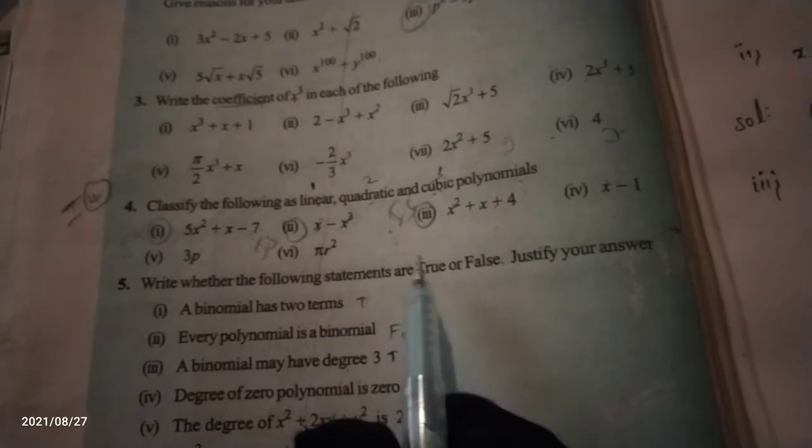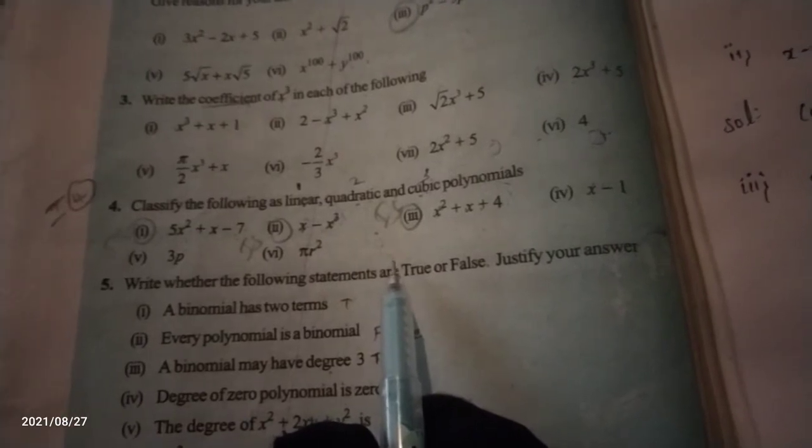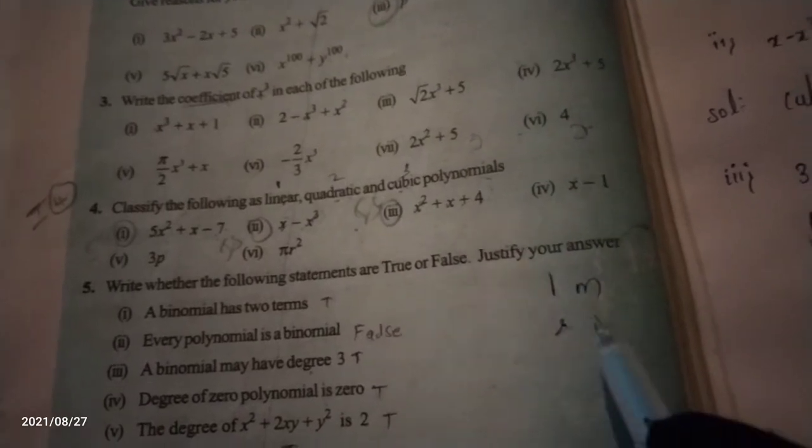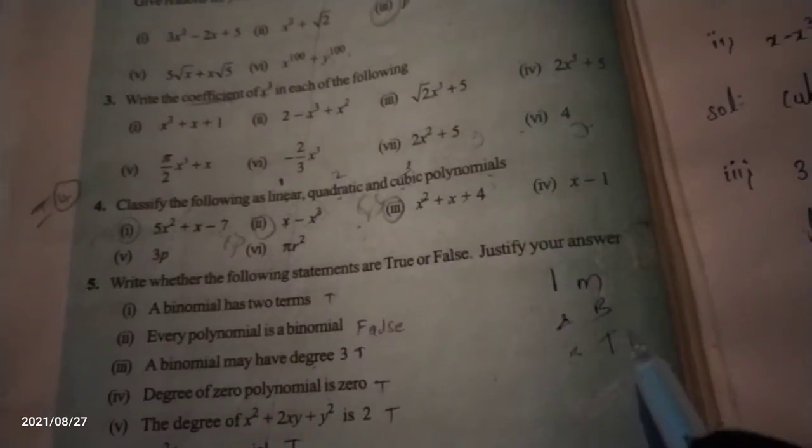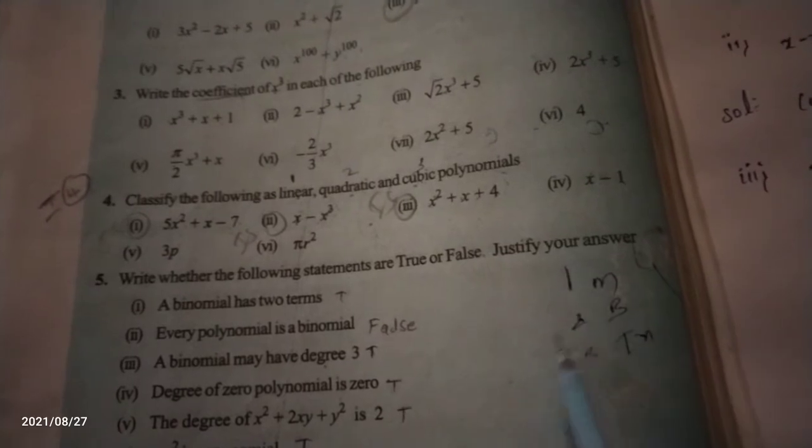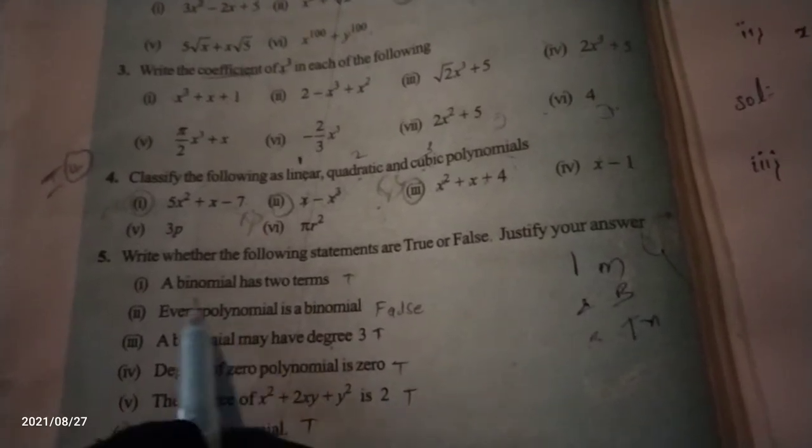The fifth question says: write whether the following statements are true or false and justify your answer. According to the terms: if you have one term it is a monomial, two terms it is a binomial, three terms it is a trinomial. We have already learned these definitions. Now just write what is true and what is false. The first statement: binomial has two terms — is it right or not?